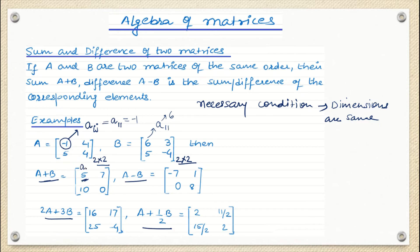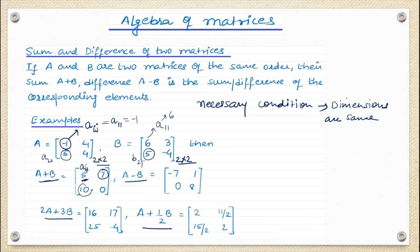The corresponding elements at location A21 and B21 are 5 and 5, so we write 5 plus 5, which is 10, and the last element is 4 minus 4, which is 0. If I have to perform A minus B, same thing — instead of addition, I do subtraction. So minus 1 minus 6 will give you minus 7, and so on.